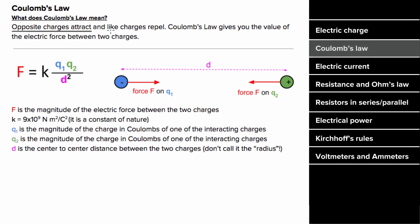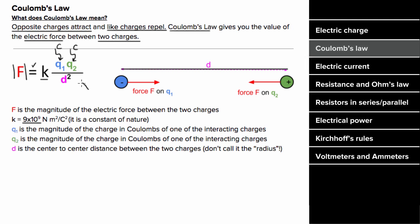Opposite charges attract and like charges repel, and what Coulomb's Law does is it gives you a way to find the magnitude of the electric force between two charges. The formula for Coulomb's Law says that the magnitude of the electric force between two charges Q1 and Q2 is gonna equal the electric constant K, which is 9 times 10 to the ninth, times the product of the two charges measured in Coulombs, divided by the center-to-center distance between those two charges, squared. You can't forget to square this distance, and it's gotta be in meters if you want SI units of Newtons for the force.